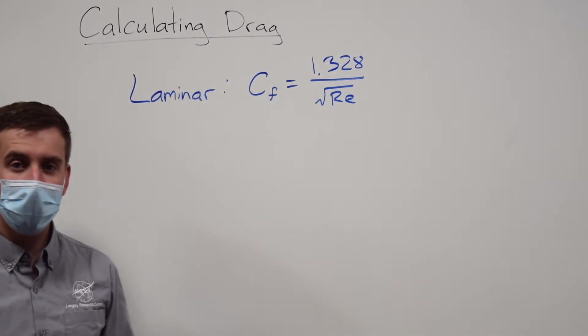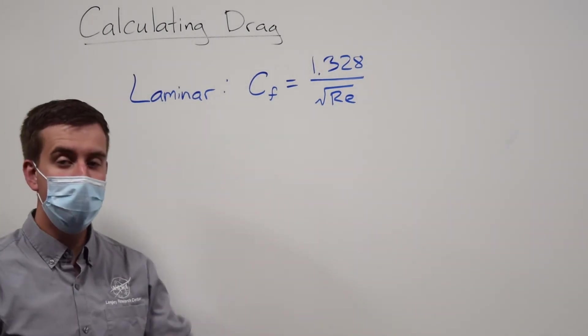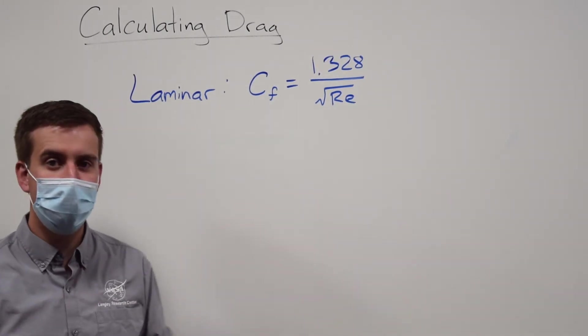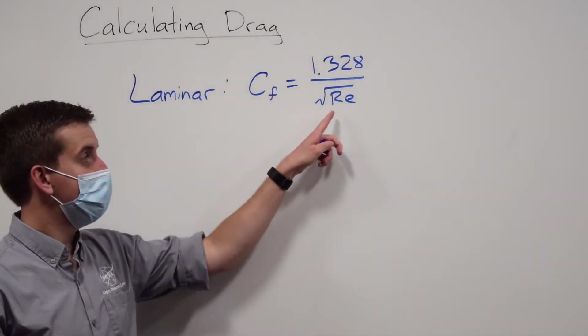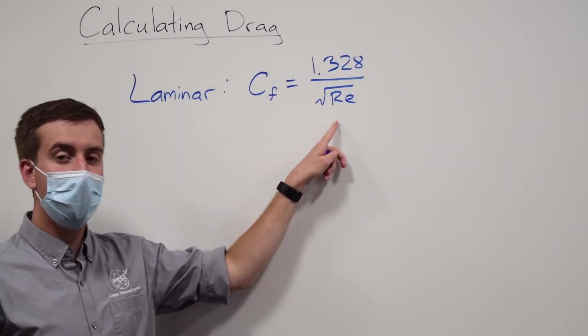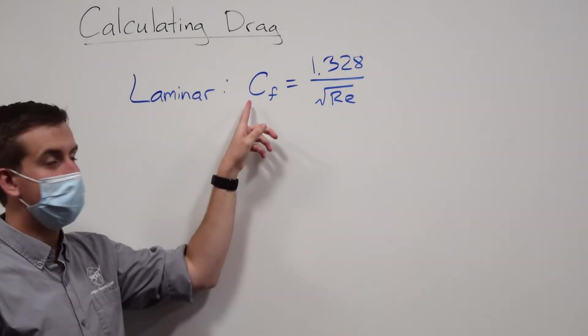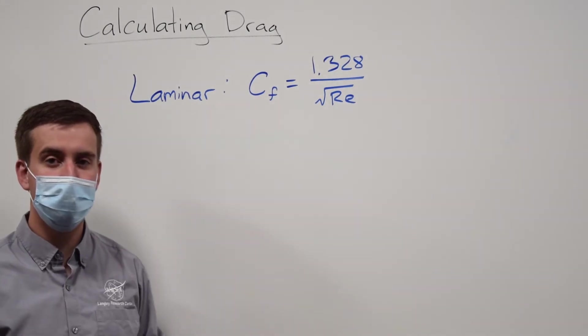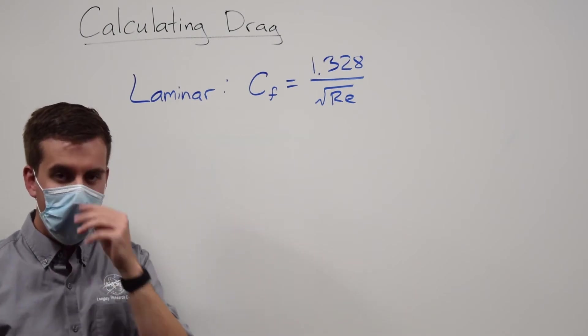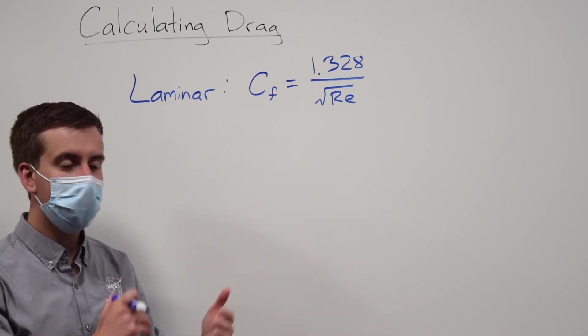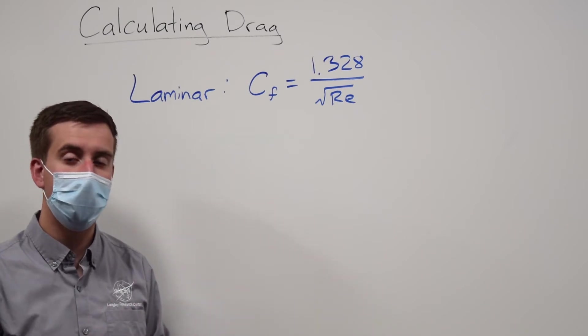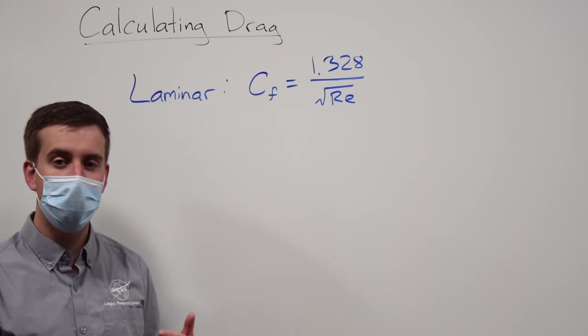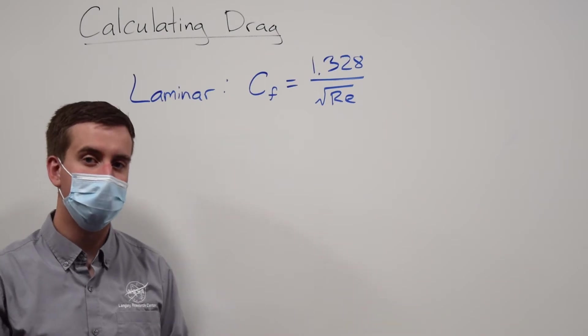Then the skin friction coefficient is 1.328 divided by the square root of the Reynolds number. And so you see as the Reynolds number increases, we actually get a smaller coefficient of skin friction drag. However, you have to actually do some more of the math to see what that actually means for your airplane, because having a different Reynolds number can imply a couple different things.